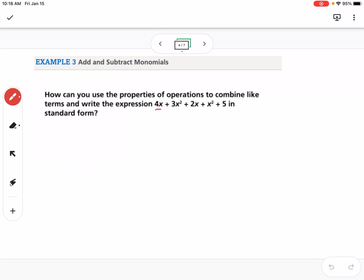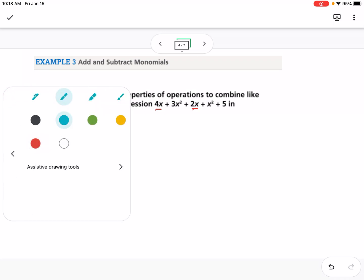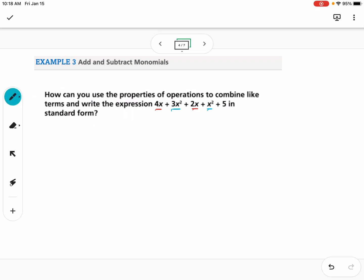So I have a 4x and a 2x that can be combined, and I have a 3x squared and an x squared that can be combined, and I have a 5 that can't be combined with anything. So I'm going to write this from the highest power, which is x squared. So 3x squared plus x squared would be 4x squared, and then a 4x and a 2x, so that would be 6x, and then plus 5.